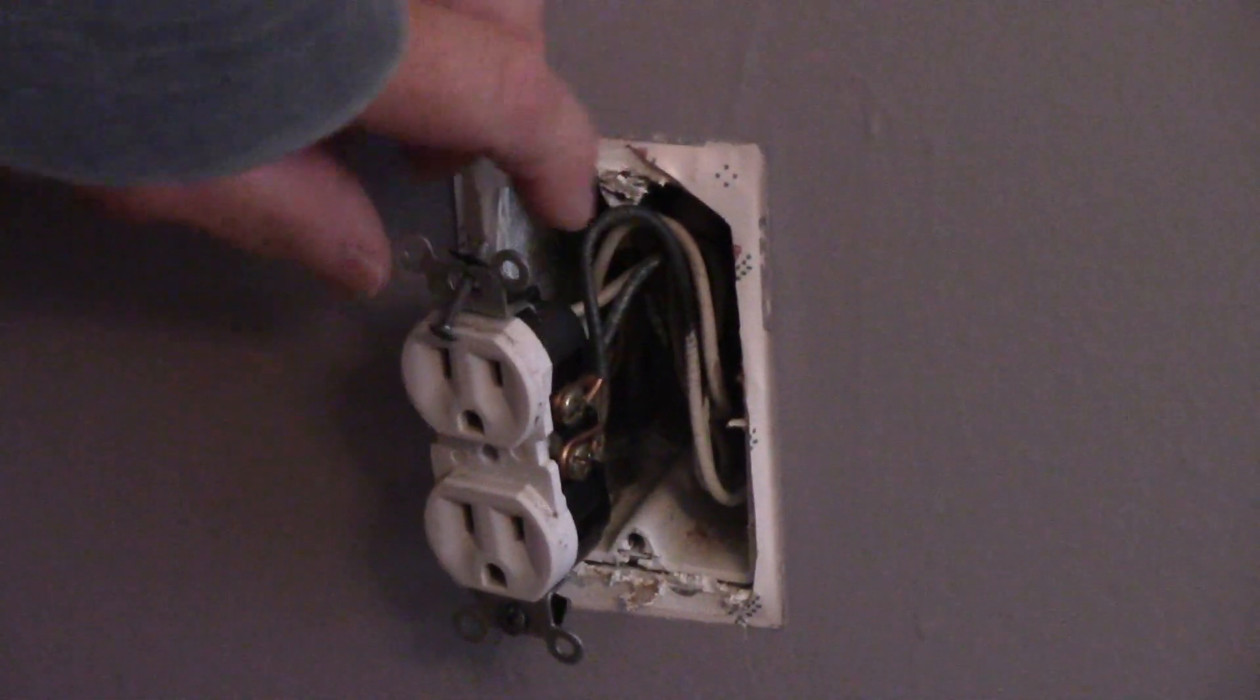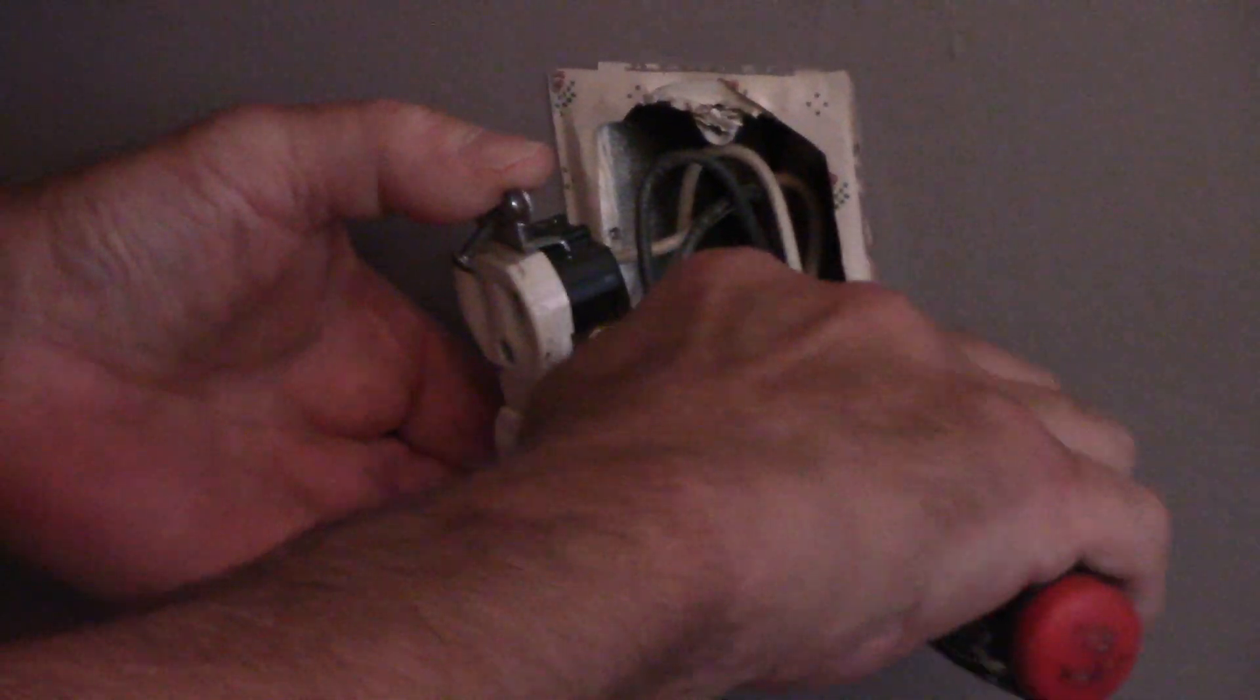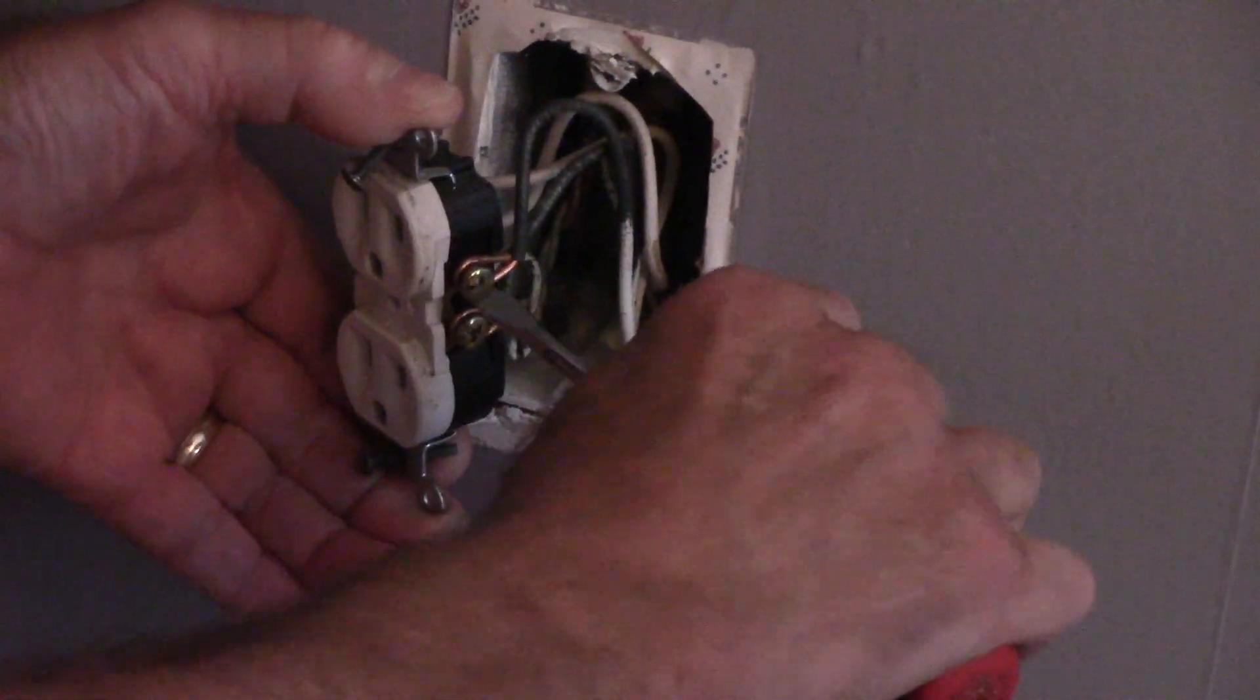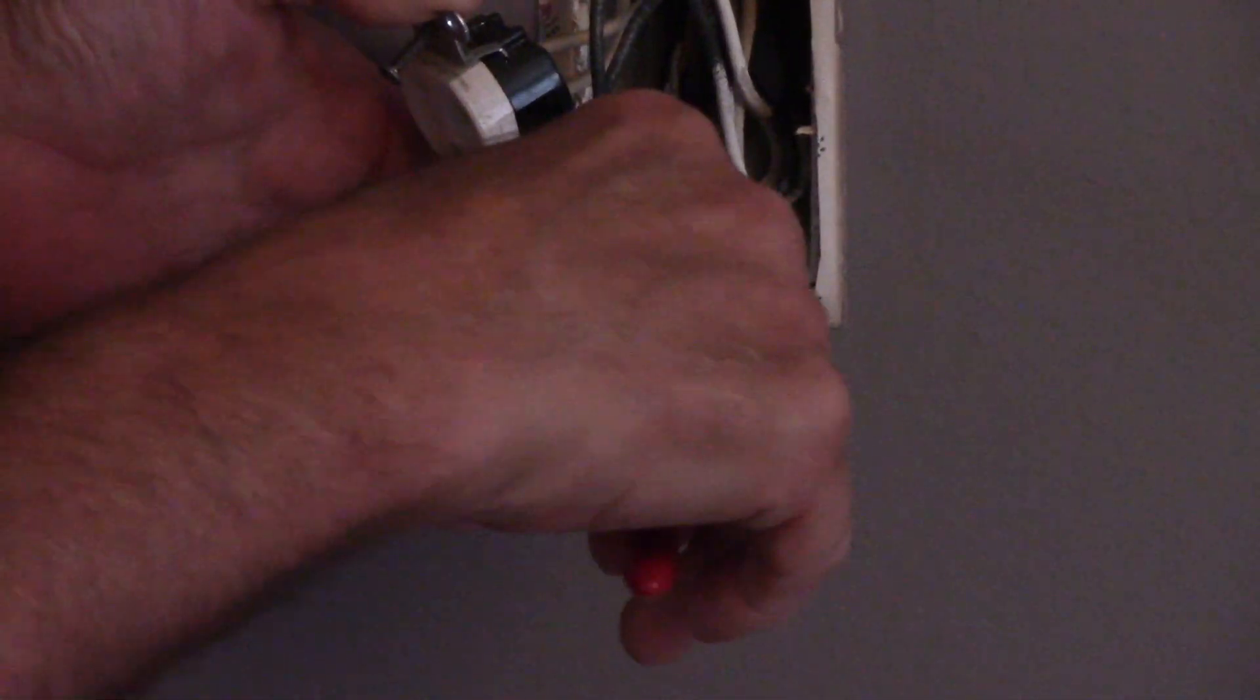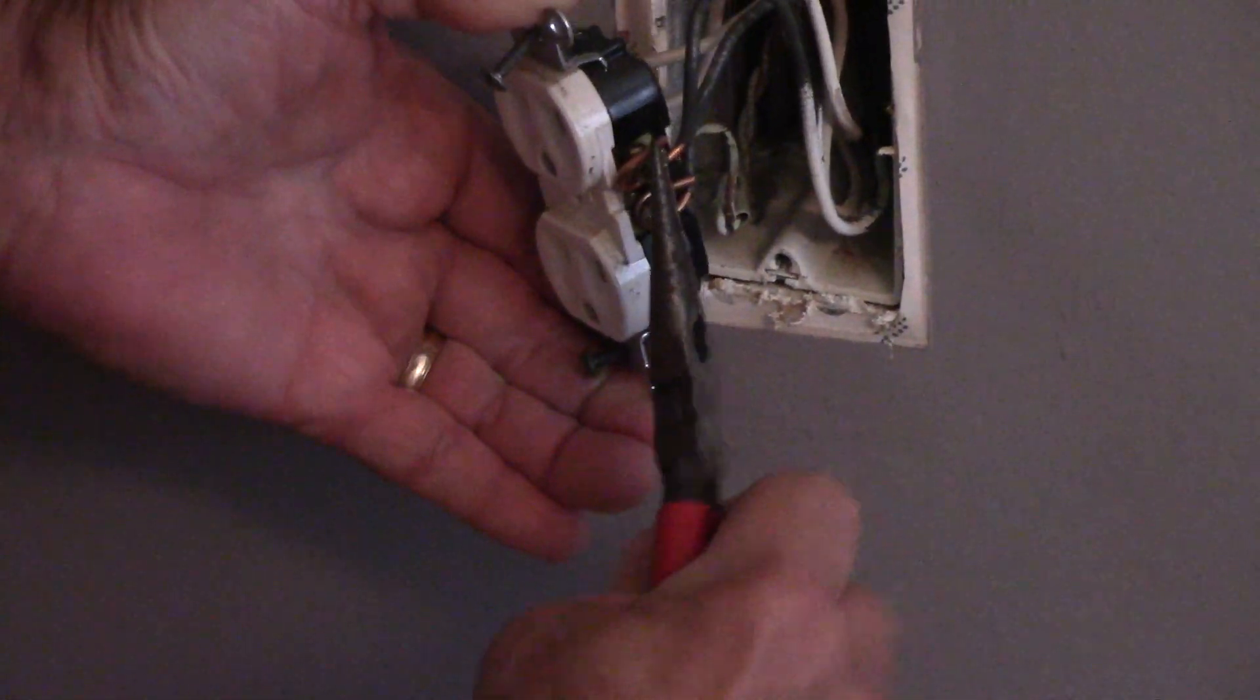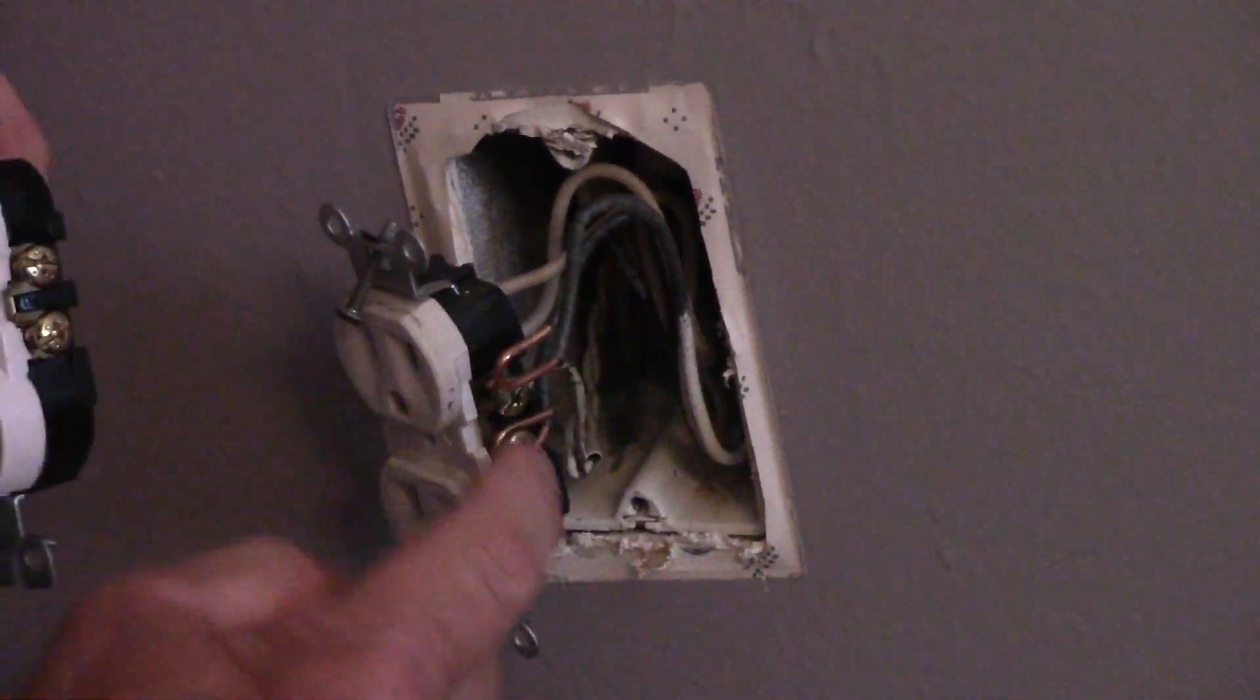First thing we're going to do is we're going to take off that wire right there. I'll turn it so you can see. Now, sometimes these wires are a little bit tough to come off because you can see how it's closed. The loop is closed right here. So sometimes we'll need to open that loop up just a little bit just to get the wire to come off. Now, what I would recommend, if you've never done this before, do one wire at a time so you don't make a mistake.